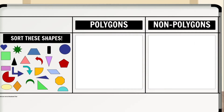Now, do this activity where you have to sort the following shapes into polygons or non-polygons. You have two minutes to sort these. You can do this on your notebook.